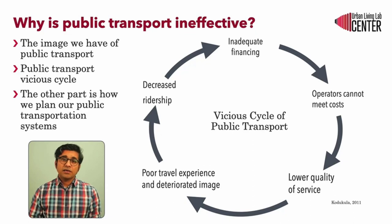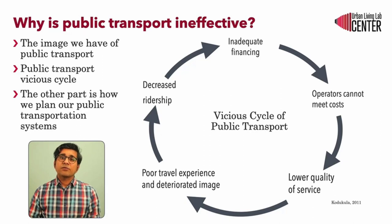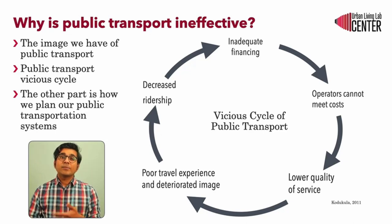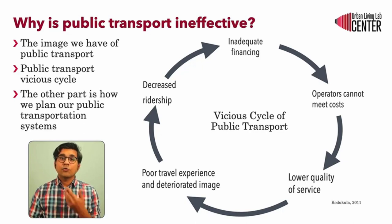The fares are usually decided by the government, and governments try to keep fares often low through subsidies with the notion that public transport is accessible for the poor. The operators have to meet their costs from ticket sales — also called fare box revenue. When fares are kept low and no incentives are provided, there will be a gap between costs and income. To meet their costs, operators reduce service quality, which translates into infrequent buses, crowding on some routes, and poor quality vehicles. This reduces the image of public transport, thereby reducing ridership, further pushing revenues down — this is the vicious cycle of public transport.